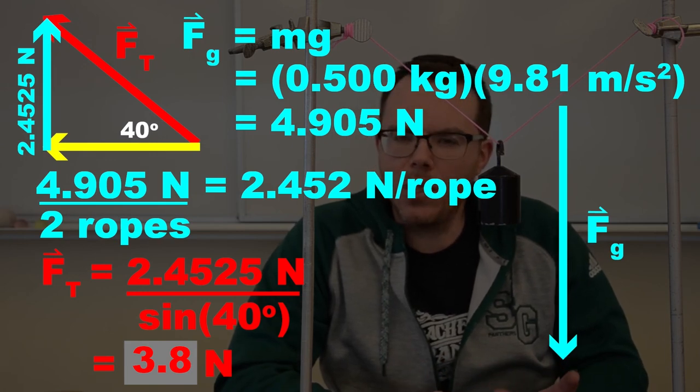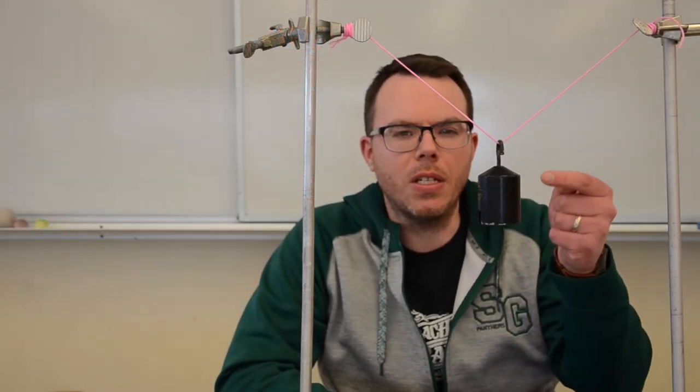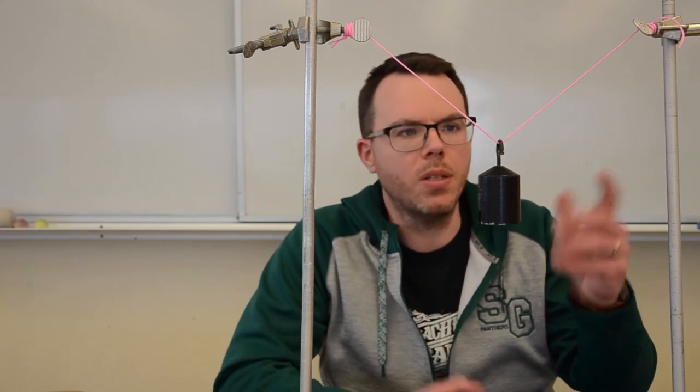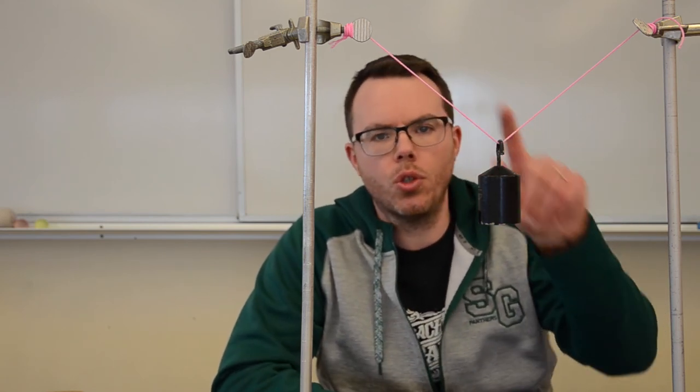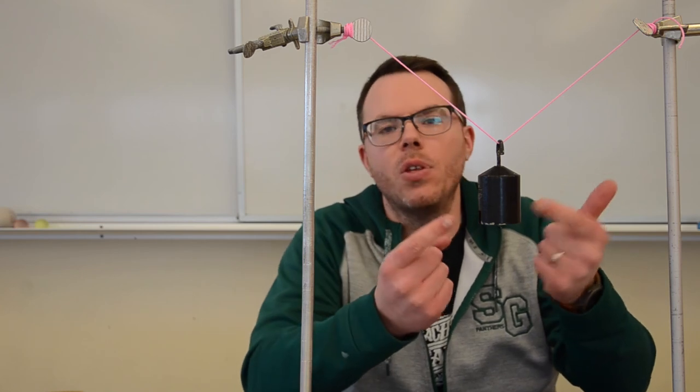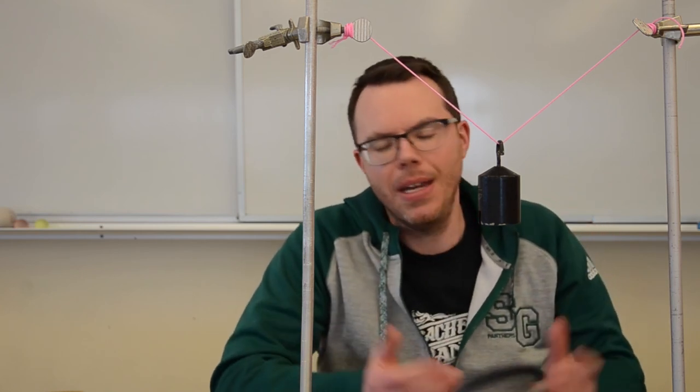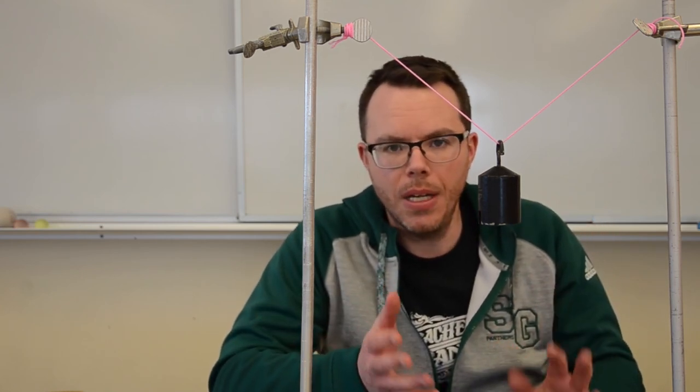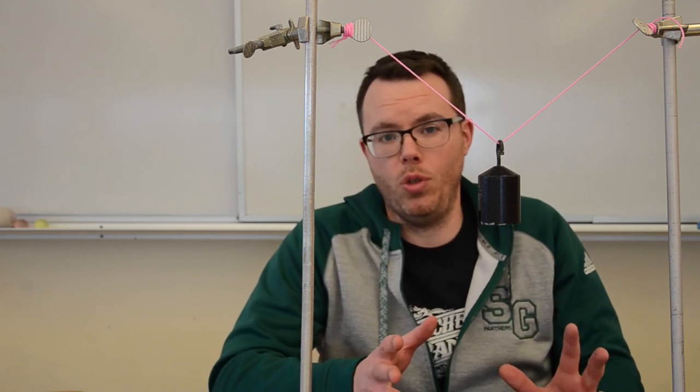I like that method. It's a little faster, but you have to remember to divide the weight by two. Reason being that each of those two strings are going to take half of the overall force of gravity on that mass. Sometimes students forget to do that. So make sure you're comfortable with one of those two methods.